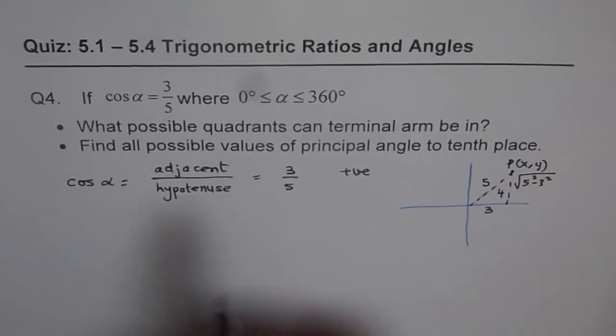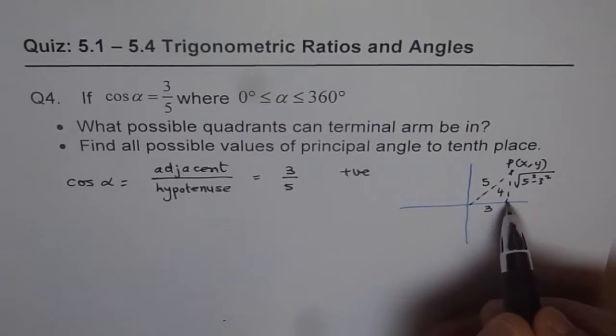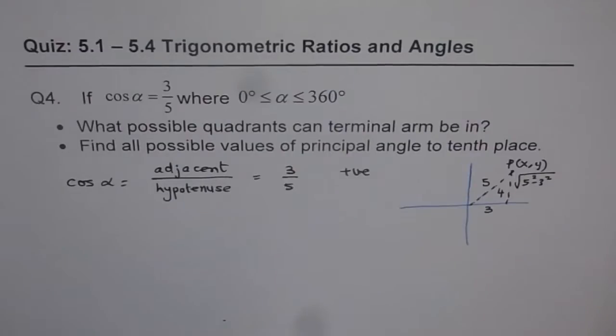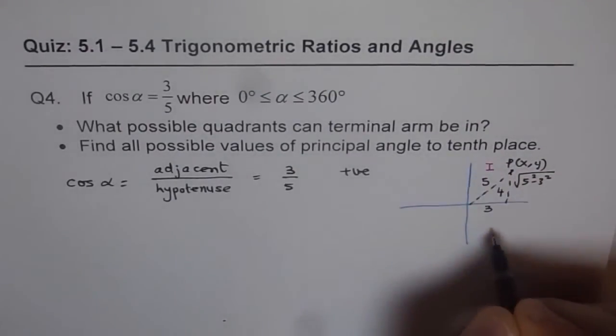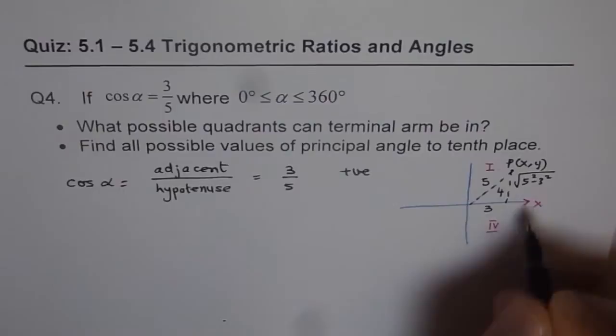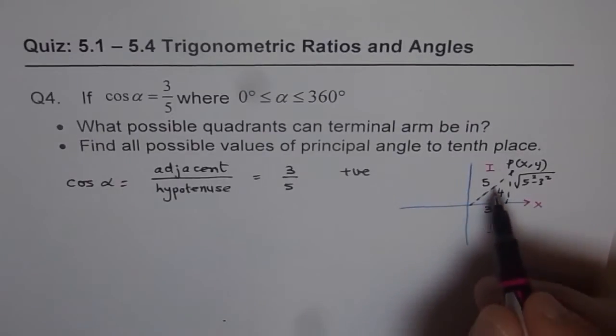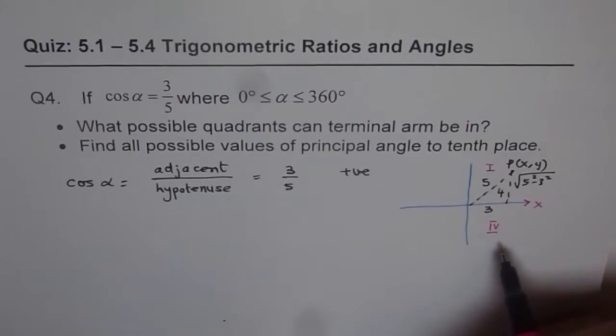Now to get cosine value as positive, we should have a positive value of x, right? So now positive value of x is only possible in two quadrants, so it could be either in quadrant 1 or in quadrant 4, correct? Since x is positive in these two quadrants, right? Hypotenuse is always considered positive.